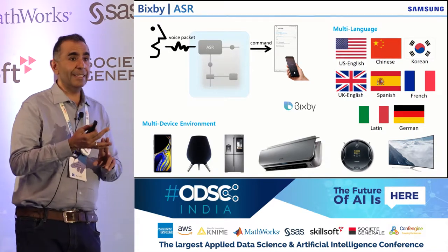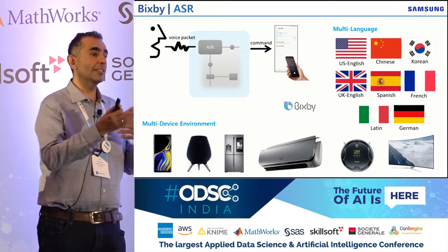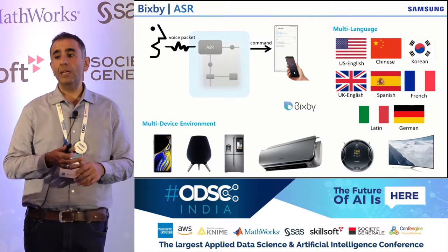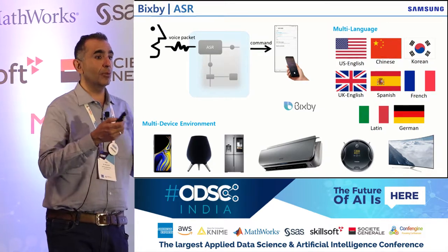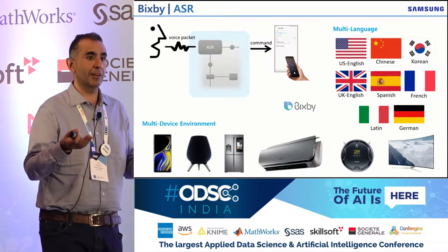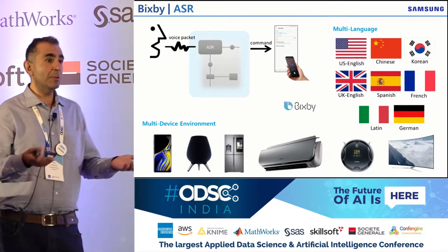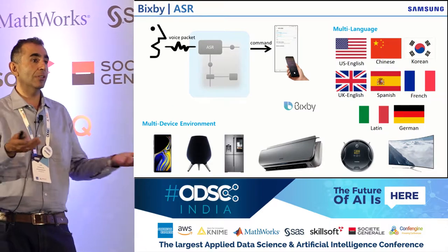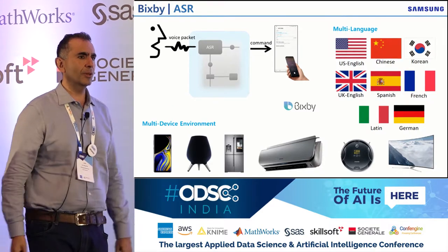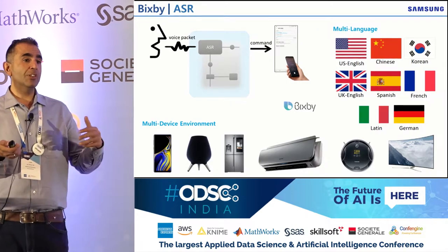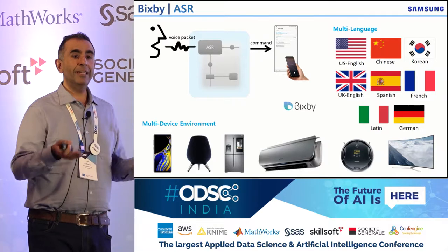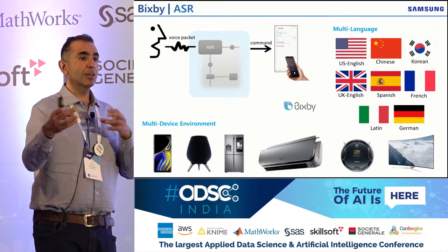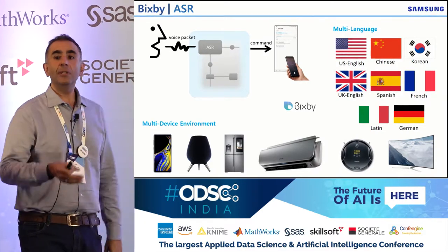Second, people can speak in multiple languages and change languages — there's code mixing happening all the time. The system should also work in noisy environments — in a home or car it may be very noisy, with dog barking and all kinds of noise. So the system should be noise-tolerant. There is also a field called speaker diarization that tries to figure out who is speaking what when people's speech overlaps.